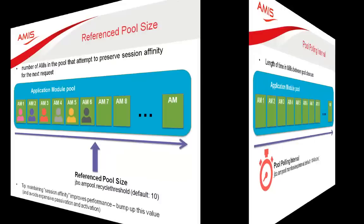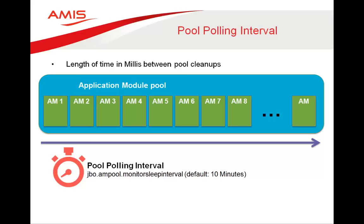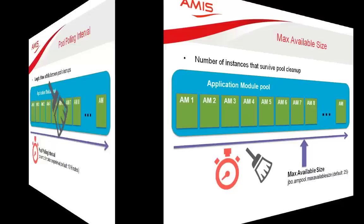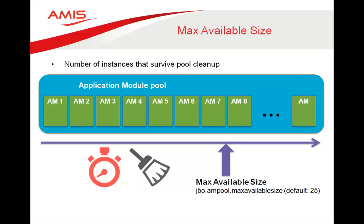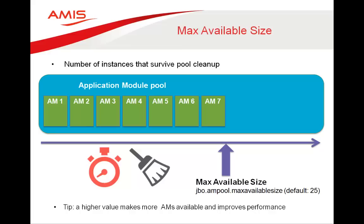The pool polling interval is the length of time in milliseconds between pool cleanups — by default every 10 minutes the pool wakes up and removes application modules marked for removal; you can leave this at its default. The max available size is the number of application module instances that survive a pool cleanup — when the pool monitor wakes up, it will try to remove available application modules down to this maximum. A higher value is recommended to make more application modules available and improve performance.